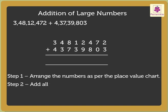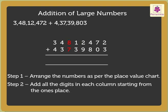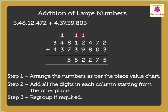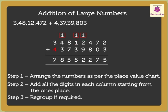Add all the digits in each column, starting from the ones place. Step 3 — Regroup if required. Finally, we got the answer. The sum of 3 crore 48 lakh 12,472 and 4 crore 37,39,803 is 7 crore 85,52,275.